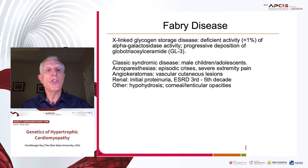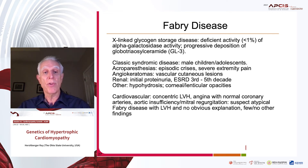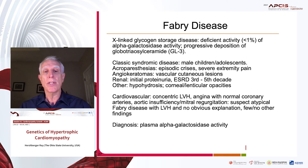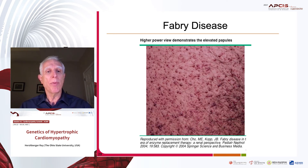Fabry disease is predominantly seen in male children and adolescents with a variety of systemic features: acroparesthesias, angiokeratomas, and renal findings among others. The cardiovascular findings are concentric LVH, some angina, and some valvular insufficiency. A hypertrophic phenotype without obvious cause is the tip-off. The diagnosis is by plasma alpha-galactosidase activity, and of course you can do genetic testing. I show you a close-up of angiokeratomas as a tip-off that this could be Fabry disease.